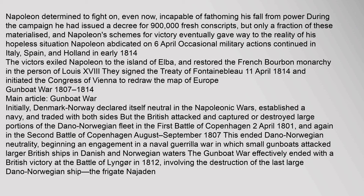Denmark-Norway initially declared itself neutral in the Napoleonic Wars, established a navy, and traded with both sides. But the British attacked and captured or destroyed large portions of the Dano-Norwegian fleet in the First Battle of Copenhagen on 2 April 1801, and again in the Second Battle of Copenhagen in August–September 1807. This ended Dano-Norwegian neutrality, beginning an engagement in a naval guerrilla war in which small gunboats attacked larger British ships in Danish and Norwegian waters. The gunboat war effectively ended with a British victory at the Battle of Lyngør in 1812, involving the destruction of the last large Dano-Norwegian ship, the frigate Najaden.